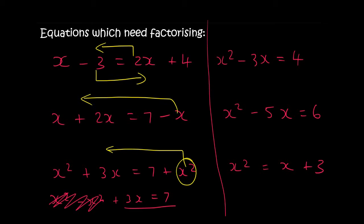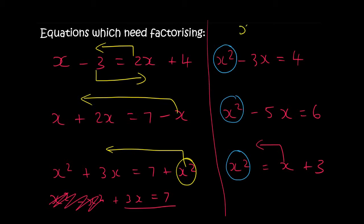But if the x squareds do not cancel out — you see here we've got an x squared that is not going to cancel out, same with this one and this one — it's not going to cancel, because if you bring everything over, the x squared would still be there. So as soon as you end up with something like an x squared or an x cubed, then you have to solve these equations in a totally different way. And that is what I'm going to be explaining in this lesson.